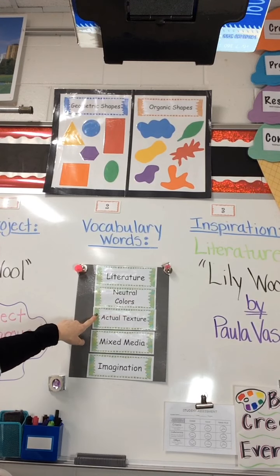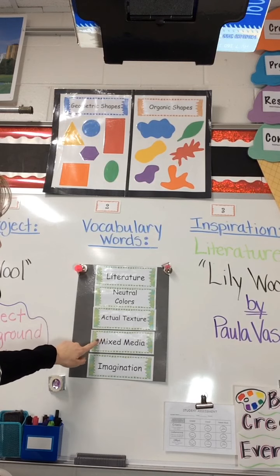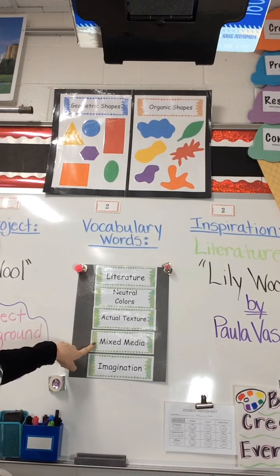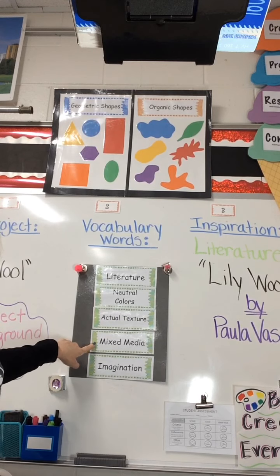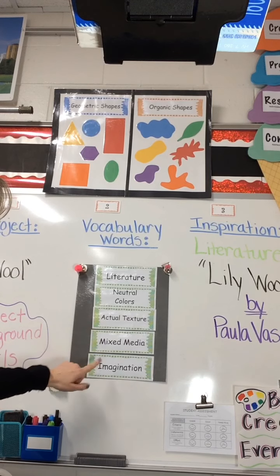Actual texture: we will be using cotton balls, if you have them, to give Lily's body some fuzzy texture. And mixed media — when we use more than one art media, we call it mixed media. We'll be using paper, cotton balls, crayons or markers, glue, scissors, and imagination.